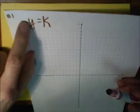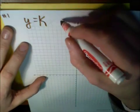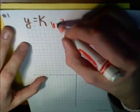Let's start with the constant function, y equals k. And let's pick just some value, say 3, y equals 3.